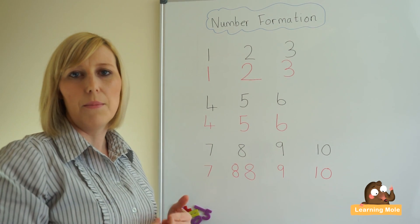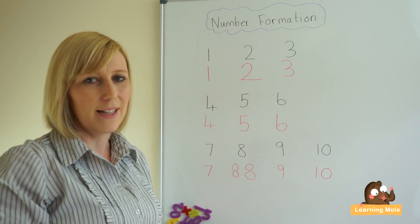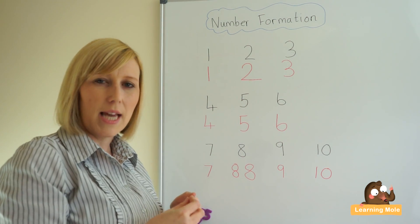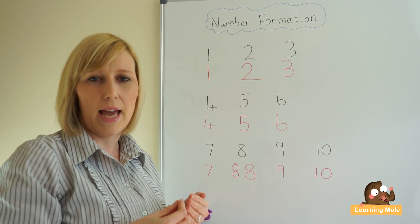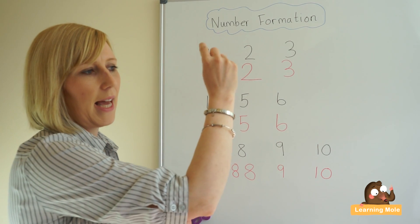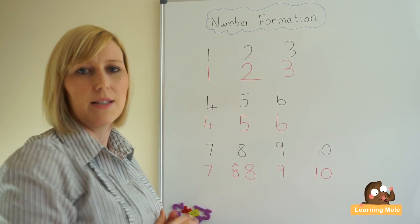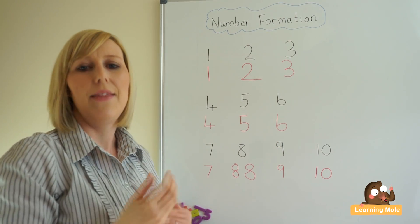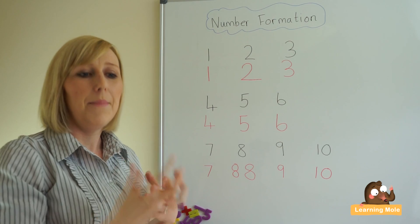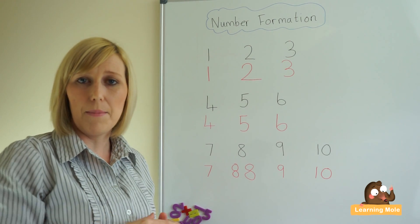Then move on to number two — remember we talked about number two being like a little duck swimming in the water. We're going to draw his little head down with his little sticky-out tail. And you just go through each of the numbers making sure that your child is able to trace them in the air.